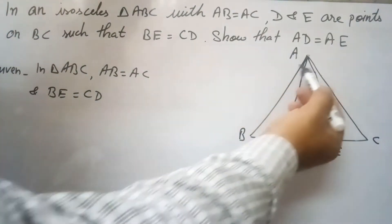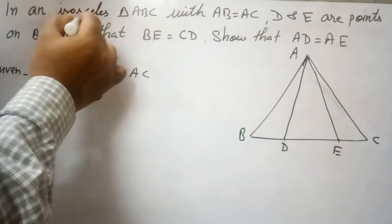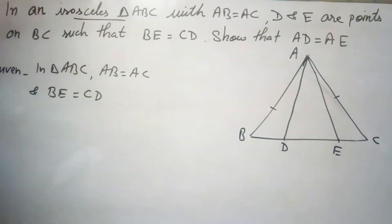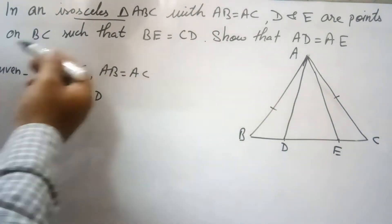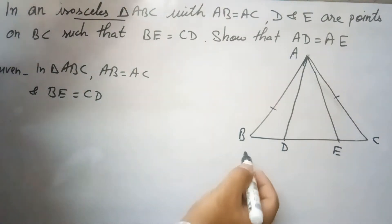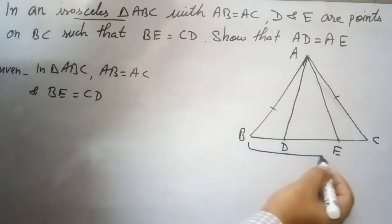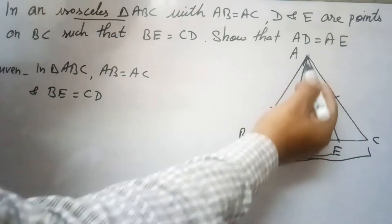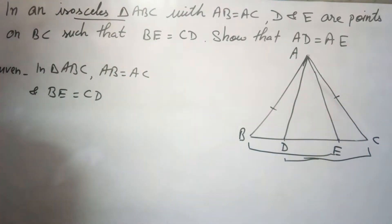In this question, ABC is an isosceles triangle where AB is equal to AC. D and E are points on BC such that BE is equal to CD, and we need to prove that AD equals AE.